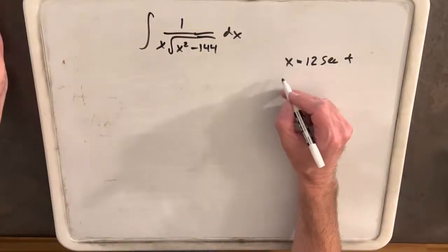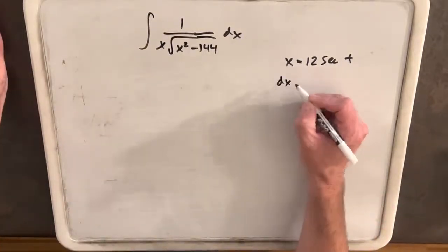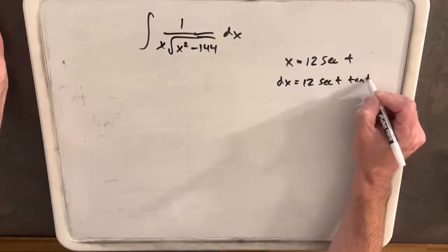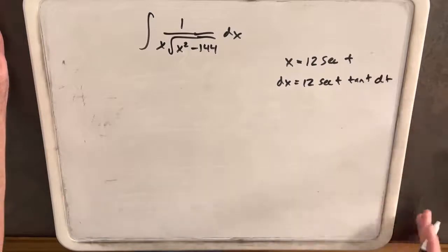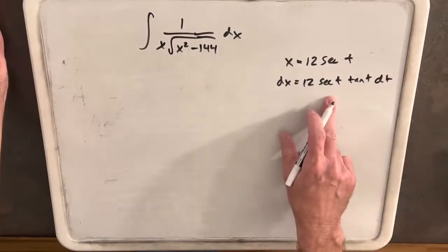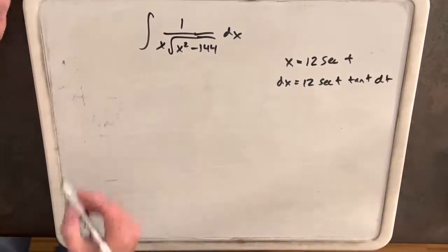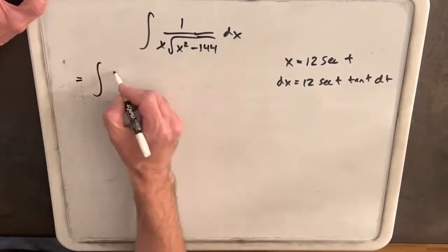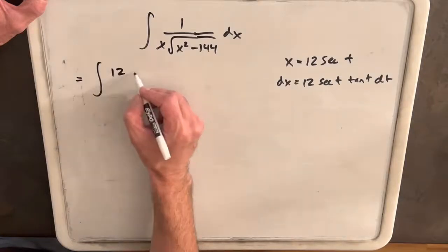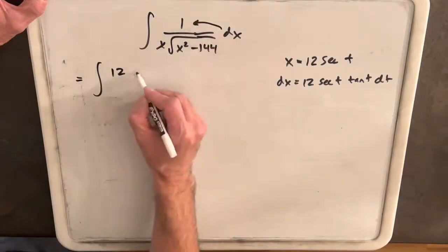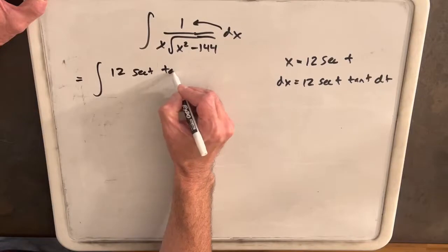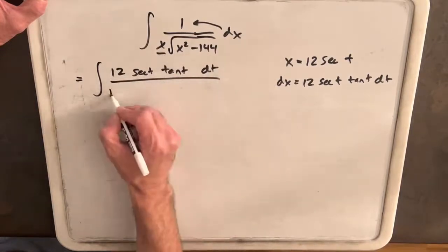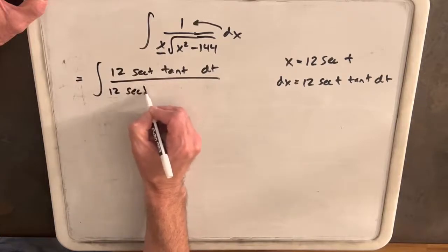Let's get the derivative while we have this here. dx is going to be 12 secant t tan t dt. Now that we have both values, we can plug them into the integral. I'll write the dx value first in the numerator: 12 secant t tan t dt. For x, we'll substitute in 12 secant t.